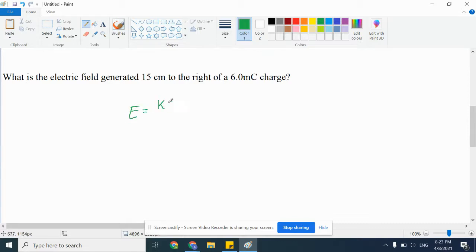So, E equals KQ over R squared. K is 9E9. Q is 6E negative 3. And R, 15 centimeters, convert it to meters, so it will be 0.15. At this point, you grab the calculator. 9 times 10 to the 9th, times 0.006, divided by 0.15 squared.